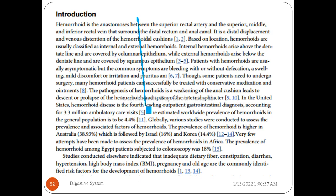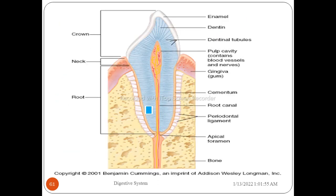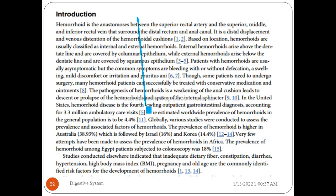This covers the small intestine and large intestine. In the next video, we will look at the accessory organs of the digestive system: the tongue, gallbladder, salivary glands, liver, and pancreas. Please subscribe to the channel to get the next videos. Have a nice time, bye bye.